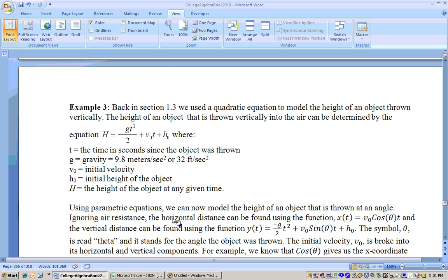Well, with parametric equations, we can actually get the equation of a ball that is thrown at a certain angle. The way you do that is the x distance is the velocity, the initial velocity times the cosine of theta t. In other words, if we have a ball that's thrown at 50 feet per second, that would be its initial velocity times the cosine of whatever angle it's thrown at.